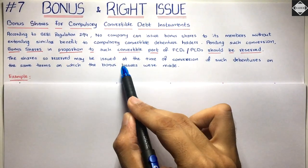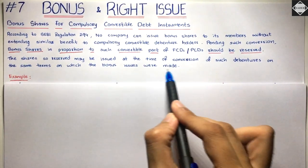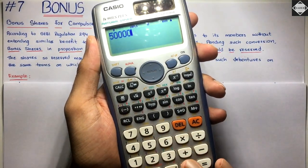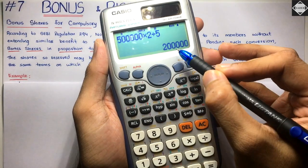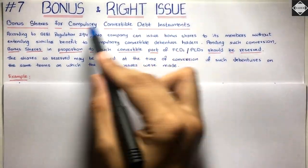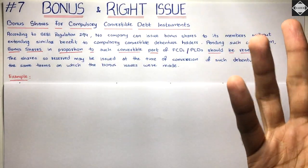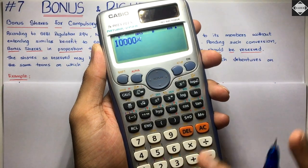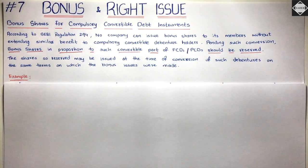The existing shareholders, say 5 lakh shares, got a bonus of 2 for 5 — that's 2 lakh bonus shares. Similarly, the holders of compulsory convertible debt instruments also get the same proportion. Normally they were going to get 10,000 shares, so on those 10,000 shares we applied the same bonus ratio — that gives 4,000 shares. Clear and simple.